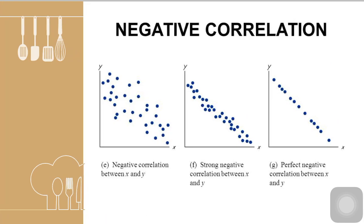For negative correlation, here could be three examples. The last one is a perfect negative correlation — if you draw the trend line, all the points will pass through it. The one in the middle has a strong negative correlation; if you draw the trend line, almost all of the points would pass by the line. The third one is a negative correlation, but it's a weak one — some points are scattered, some are too far, and some are too near.